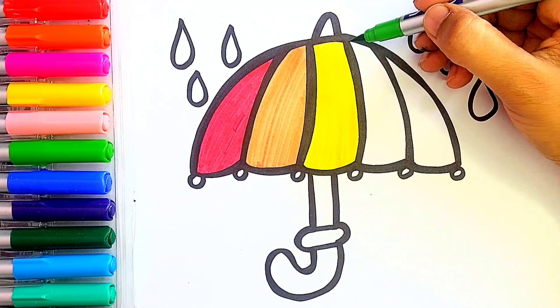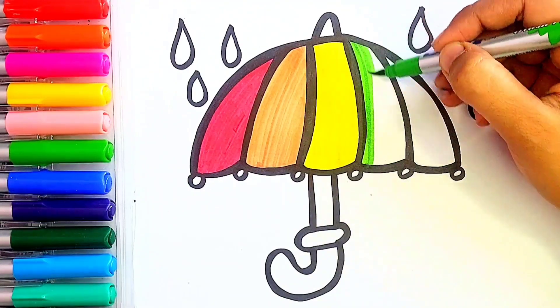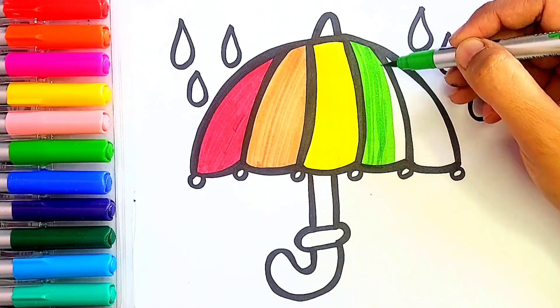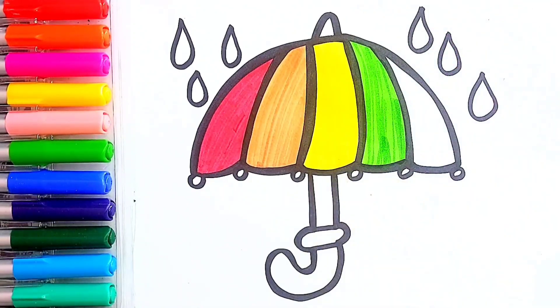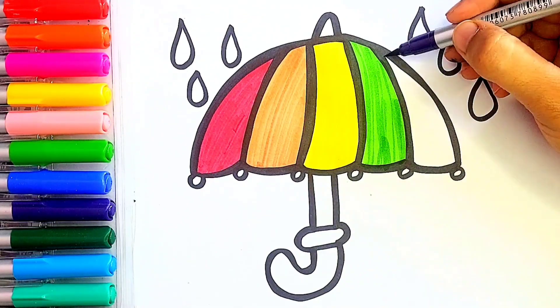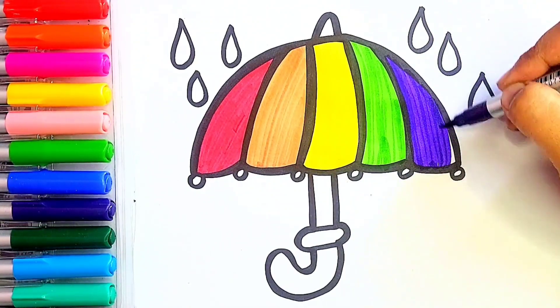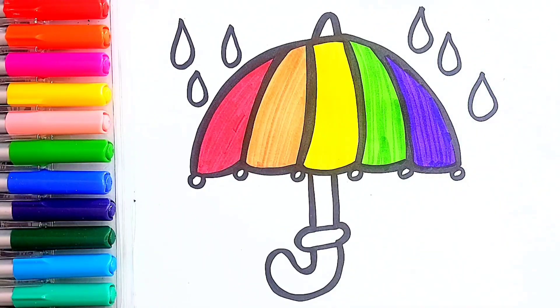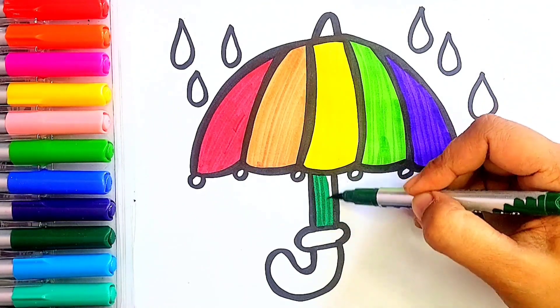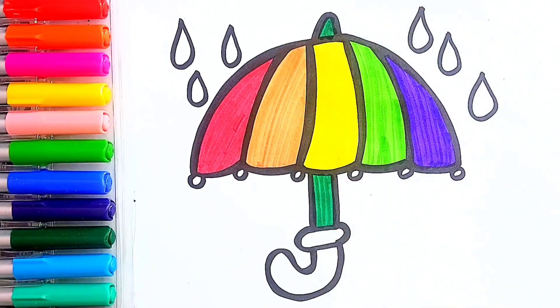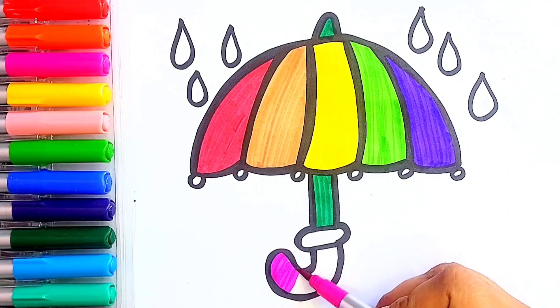Now I am using light green color. And at the end, I am using purple color. For our umbrella's handle, I am using green color. Now I am using blue color and bright pink color.